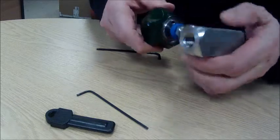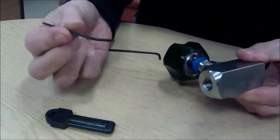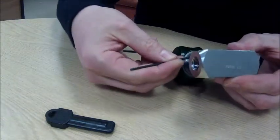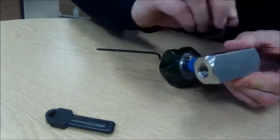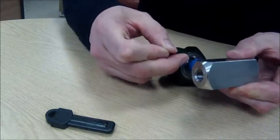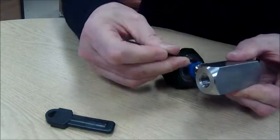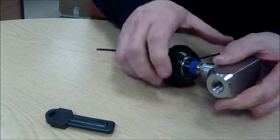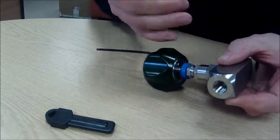you then take the smaller allen key, the two millimeter allen key, and tighten up that grub screw like so. That's fully tightened up there. Now that screw is biting into the underside of the internals of the lock, so that's fitted now.